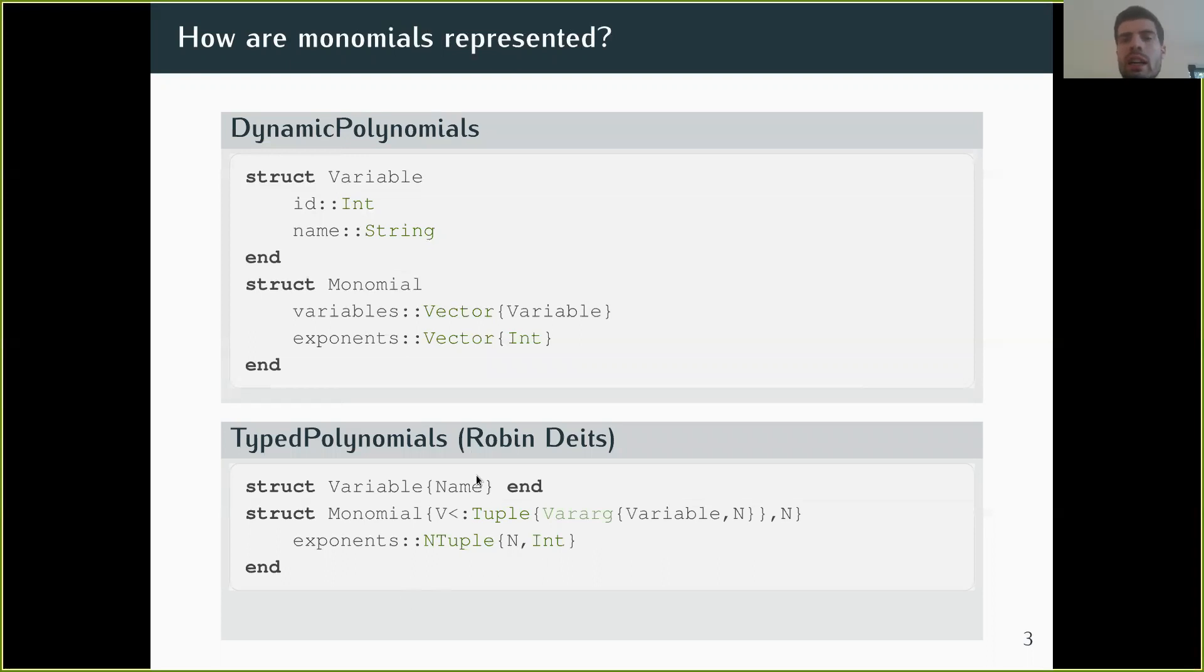So whenever you multiply two monomials, you would look at compile time because it's in the parameters of the type. At compile time, you can compare if the two monomials have the same variables, then you can simply sum the exponents. If they have different variables, you can know how to combine the exponents at compile time.